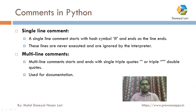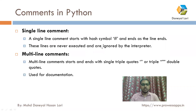A single-line comment starts with the hash symbol and ends as the line ends. When the interpreter finds that any line is starting with the hash symbol, the interpreter will ignore that line. These lines are never executed and are ignored by the interpreter.